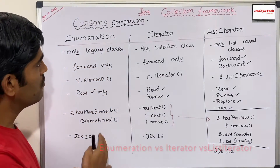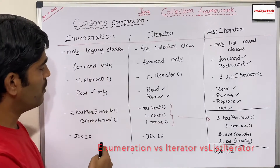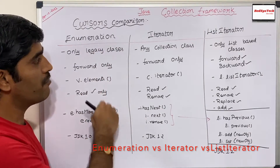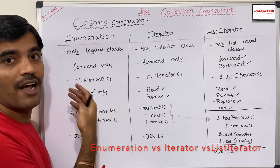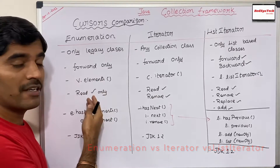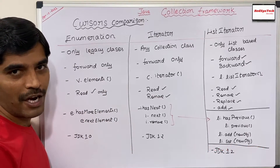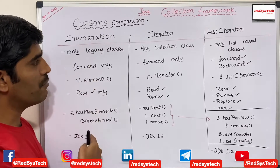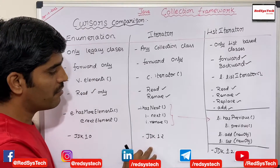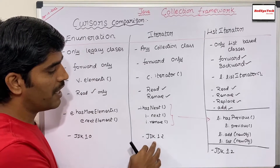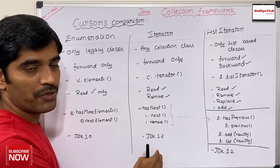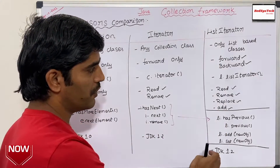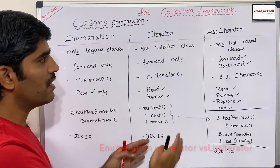Enumeration was introduced in JDK 1.0 because it was mainly for legacy classes. At that time, they were mainly focusing on Vector. Nowadays, we are not using Vector at all, and it was a legacy implementation. Starting from JDK 1.2, both Iterator and ListIterator were introduced. This is the difference between these three.